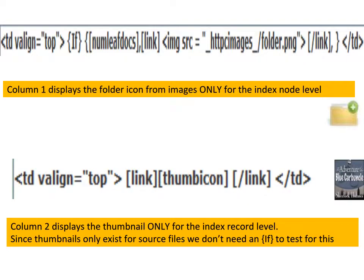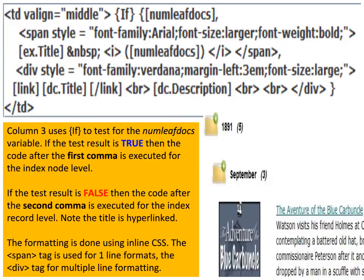If our code is correct, the first column will contain just the folder with improved affordance — it looks like it should be opened and it looks clickable. The second column will display the book cover thumbnail icon of the source JPEG file. The third column does a lot: it shows the text of the index entry or the title of the book and the metadata. The if statement works: if true, we get the folder, text, and in brackets the number of entries from numleaf docs; at the record index level we see the metadata and thumbnail icon. Save it and preview it to see what happens.